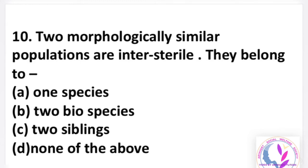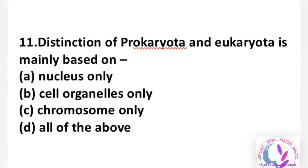Question number 11: the difference between prokaryotes and eukaryotes is mainly based on — option A: nucleus only, B: cell organelle only, C: chromosomes only, D: all of the above. The answer is D, all of the above.